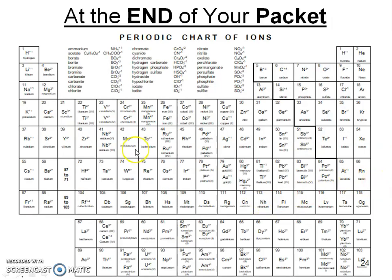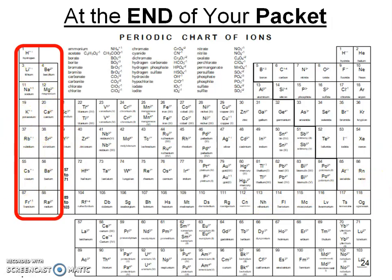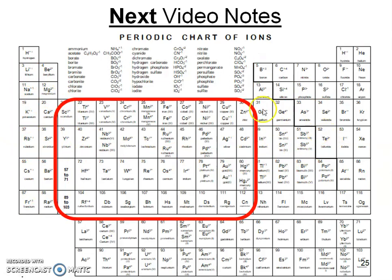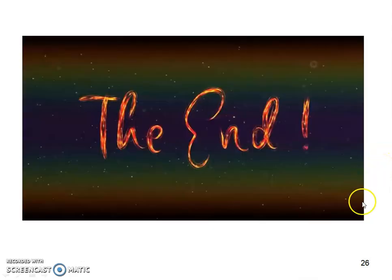This is at the end of your packet. You have your metals over here and your nonmetals over here. In the next video, we're going to talk a little bit more in depth about these. Because if you notice, they have multiple names because they have multiple charges. We'll see you in class.